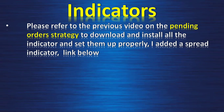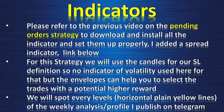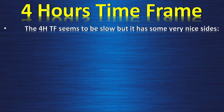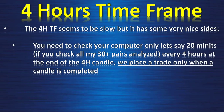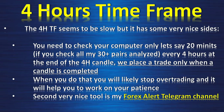For indicators, please refer to the previous video on the pending order strategy to download and install them properly. I added the spread indicator link below. For this strategy we use the candles for stop-loss definition — no volatility indicators needed. The envelope can help you select trades with a higher potential reward. We will spot every level — horizontal yellow lines — from my weekly analysis published on Telegram. The four-hour time frame seems slow but it's very efficient: you only need to check your charts about 20 minutes every four hours across all 30-plus pairs. We place a trade only when a candle is completed, which helps you stop overtrading and builds patience.